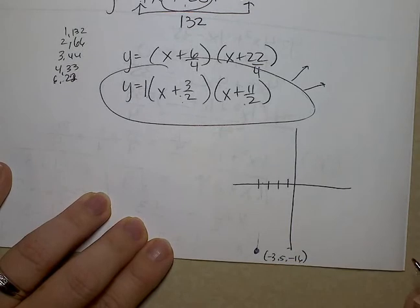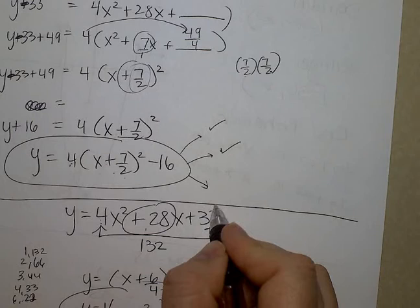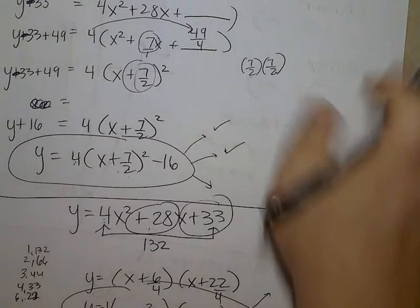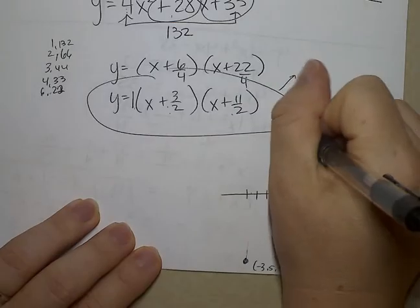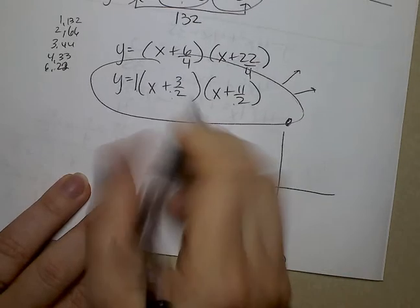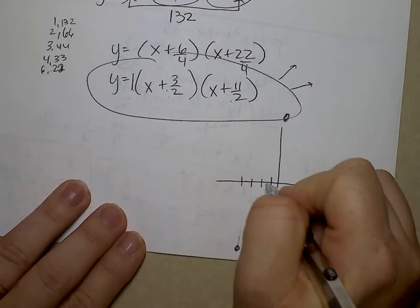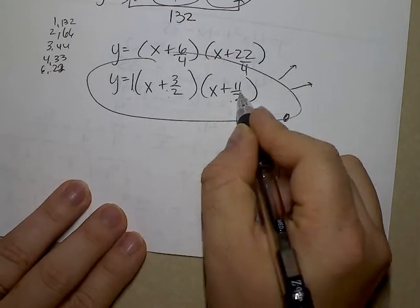Now, hold on one second. This isn't making sense to me. The reason it's not making sense to me, oh, it is, it is. What is the y intercept? Positive 33. Positive 33, which is way the heck up here somewhere. And it has x intercepts of negative 1 and a half and negative 5 and a half.